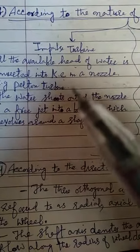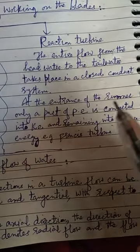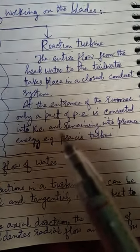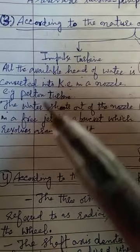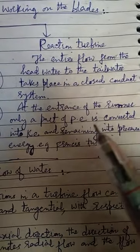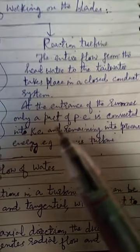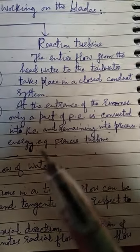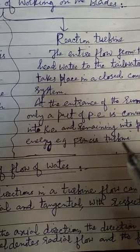The example of an impulse turbine is the Pelton turbine. For a reaction turbine, at the entrance of the runner, only part of the potential energy is converted into kinetic energy and the remaining part is converted into pressure energy — for example, the Francis turbine. So in reaction turbines, water energy is split into kinetic energy and pressure energy at the runner inlet, whereas in impulse turbines all energy is converted to kinetic energy at the nozzle.